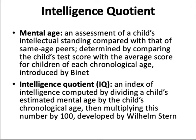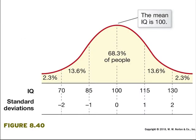IQ in the adult range is measured in comparison with the average adult. Across large groups of people, the distribution of IQ scores forms a bell curve, or normal distribution. IQ is a score on a normed test — one person's score is relative to those of the large number of people who already took the test. The standard deviation for most IQ tests is 15, and the mean is 100. Approximately 68% of people fall within one standard deviation, scoring 85 to 115, and just over 95% fall within two standard deviations, scoring 70 to 130.